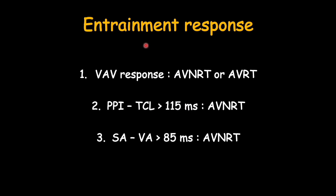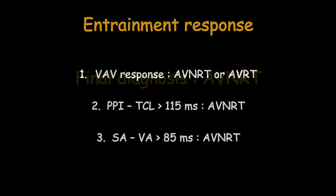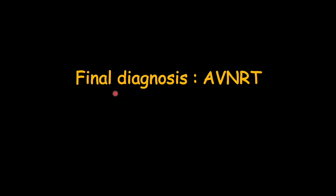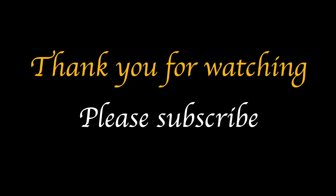So based on the entrainment in this case: the VAV response goes in favor of AVNRT or AVRT and excludes atrial tachycardia. Post-pacing interval minus tachycardia cycle length is more than 115 milliseconds, going in favor of AVNRT and excluding AVRT. Similarly, the difference between SA and VA interval is more than 85 milliseconds, also going in favor of AVNRT. So the final diagnosis in our case is AVNRT — atrioventricular nodal reentrant tachycardia. Thank you for watching this video. If you liked this video please subscribe to this channel.